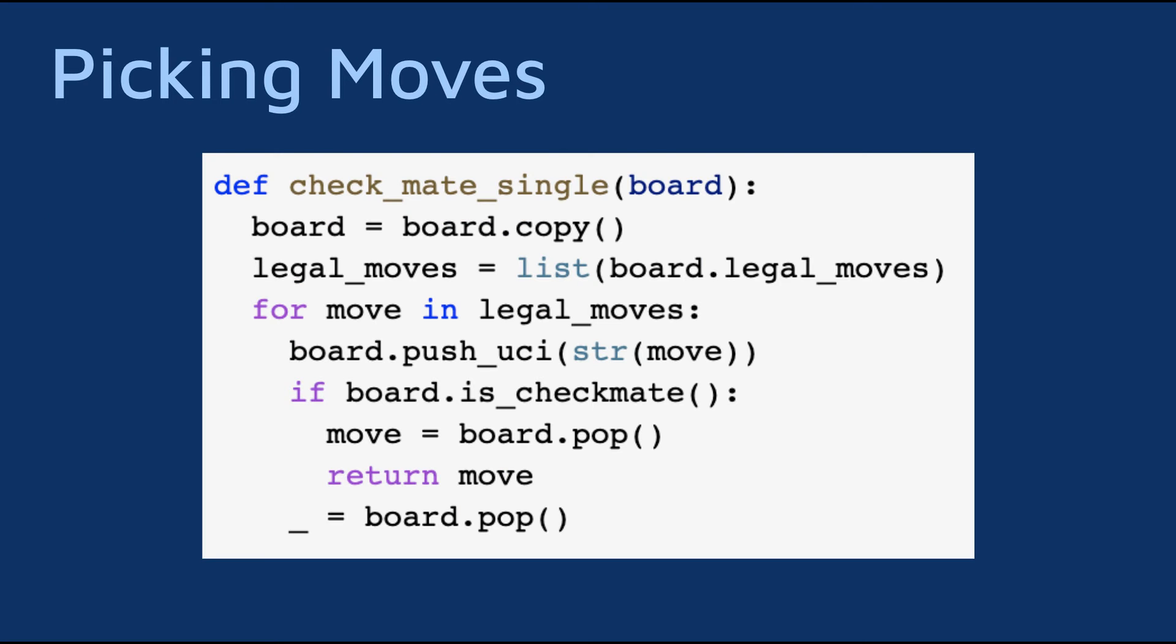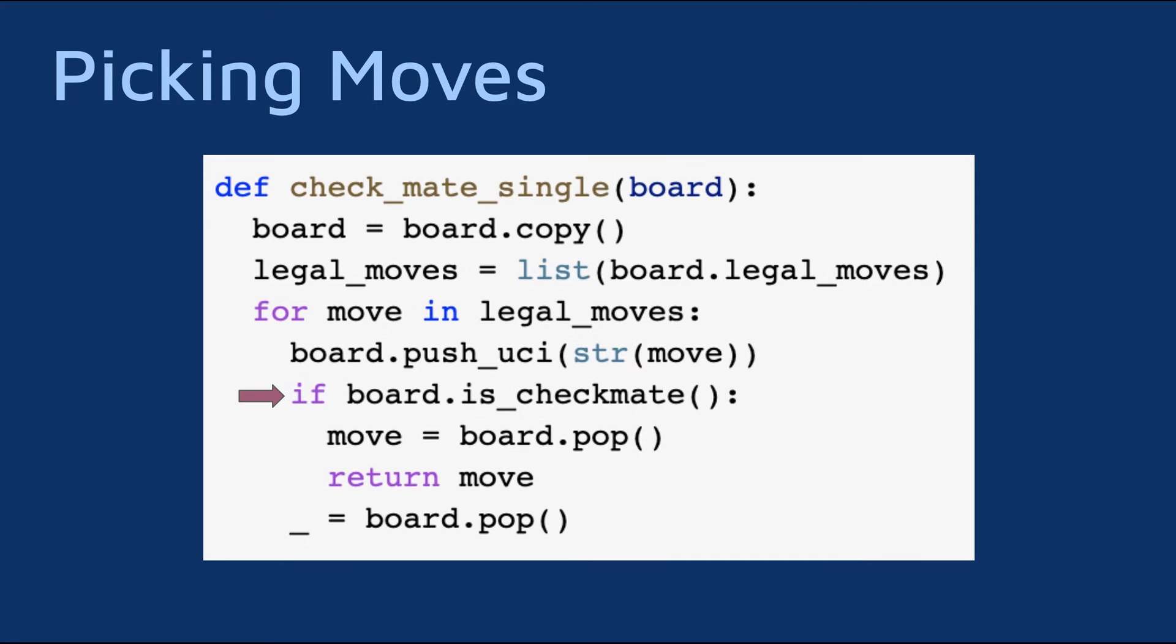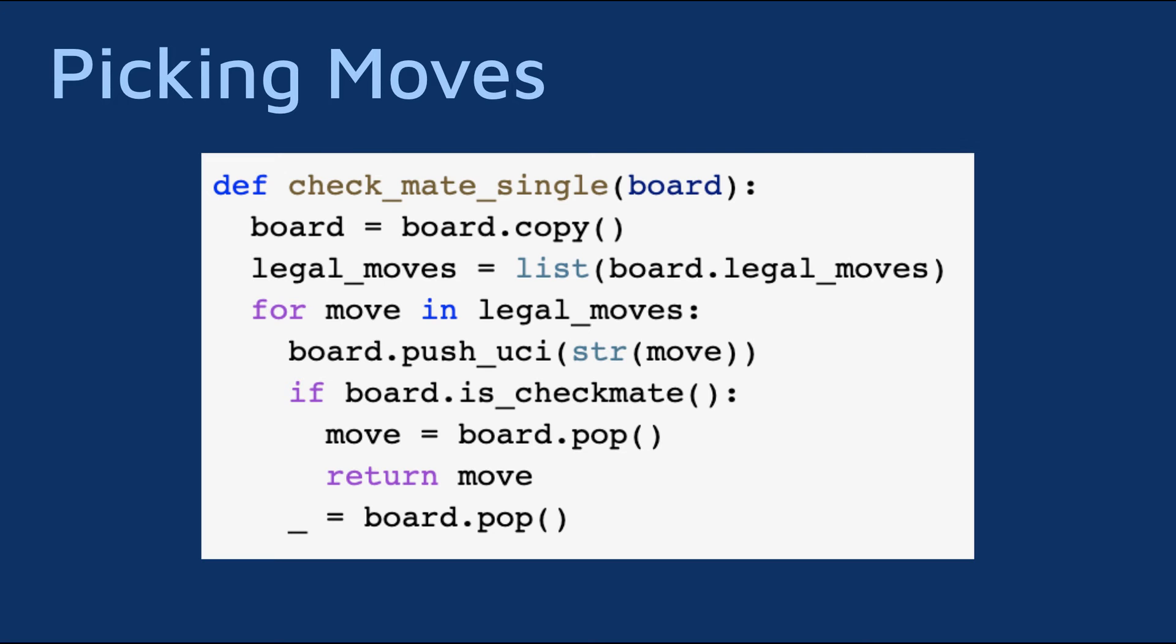First of all, to help the network a bit, we can add a simple function that checks if there is a single move mate possible. If there is, we play it, without the network having a say in it. This is how we make sure it does not pass on a clear way to win. The implementation is easy with the use of the Python chess module. Just loop through the legal moves, and if any of them results in a checkmate, return the move. A fun exercise is to use this function recursively to check for two moves forced mate. I won't show it here, but it's not that complicated and makes the AI even stronger.